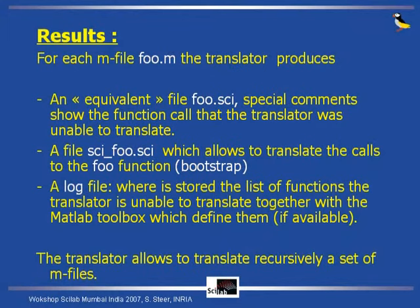As a result, for each M-file, the translator produces the translated file. It also produces a function named 'psi_foo.sci', which is used to translate the code for the foo function. So there is a sort of bootstrap: you can translate functions recursively — each function that is translated gives the way to translate the following one. There is also a log file generated that indicates missing functions, functions that the translator does not know, and functions it has not translated. In that case, it puts the function as it was in the initial code.